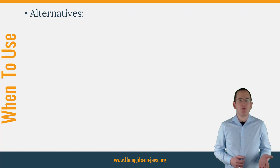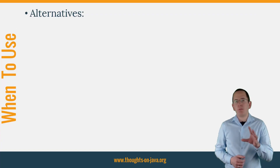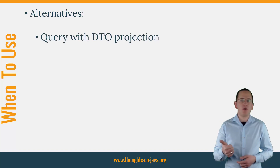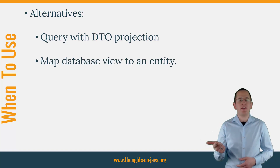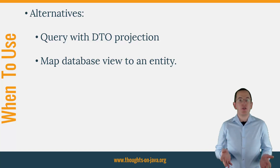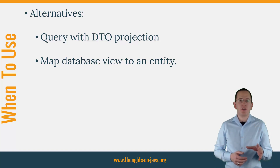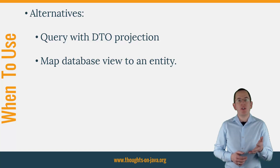Yes, Hibernate can map a read-only entity to an SQL query. But before we dive into the mapping, let's first discuss if you should use it. Instead of mapping an entity to an SQL query, you could also execute a query and map the result to a DTO, or create a database view and map it to an entity. Depending on your use case, both options offer certain benefits. As I've shown in a previous article on my blog, DTO projections are faster than entity mappings, but they don't support any managed associations to other entities. So if you can execute additional queries to retrieve the required information, a query with a DTO projection is the better choice.